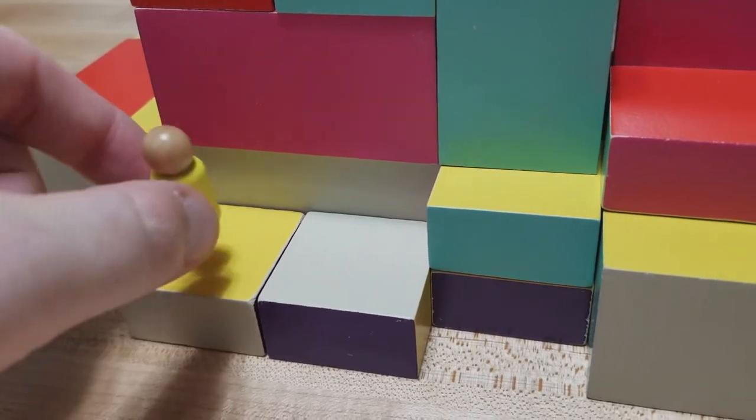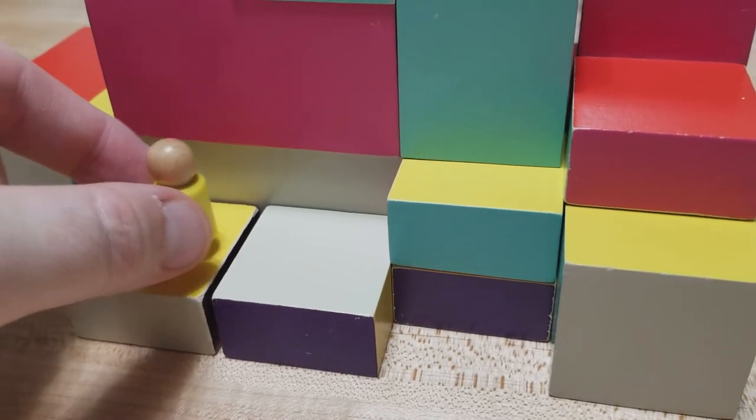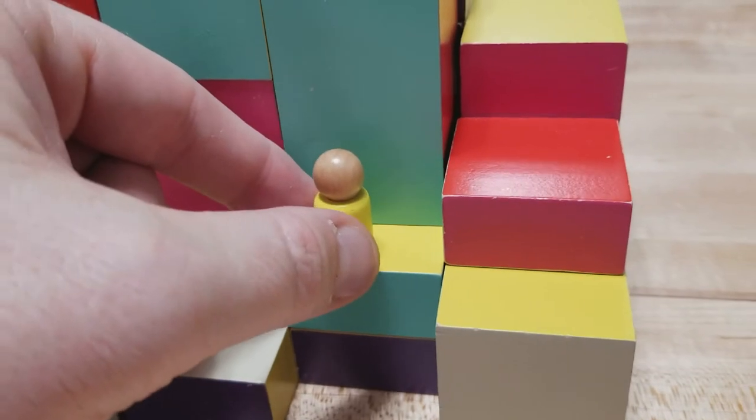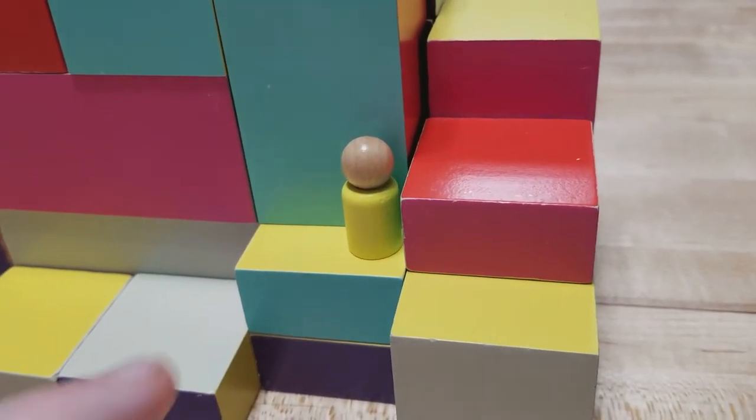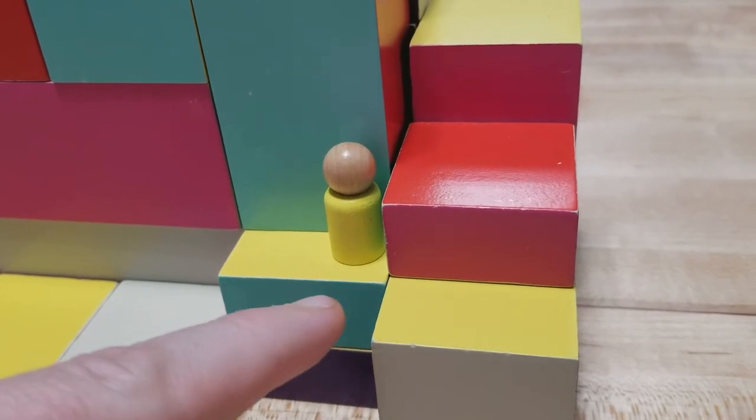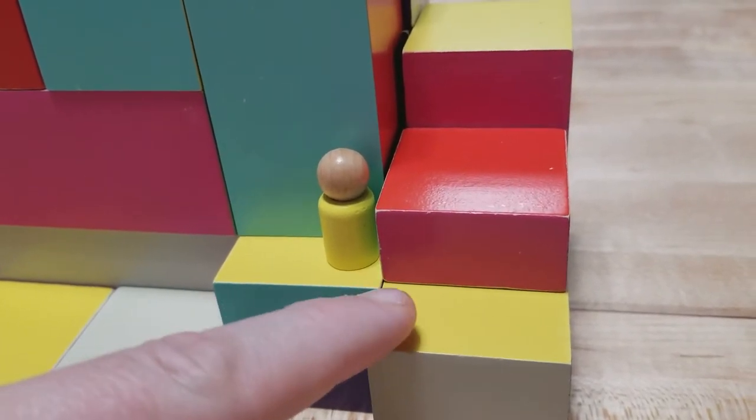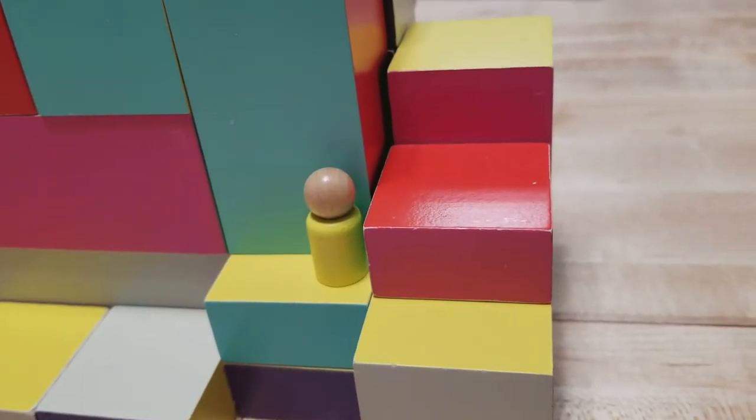So this pawn could legally go there, it could legally go here, or it could start there, move here, and continue to move. It can never move diagonal. So since this side of this piece is not touching a side of this piece, it could not move here. But he could move up here if that color was an eligible color.